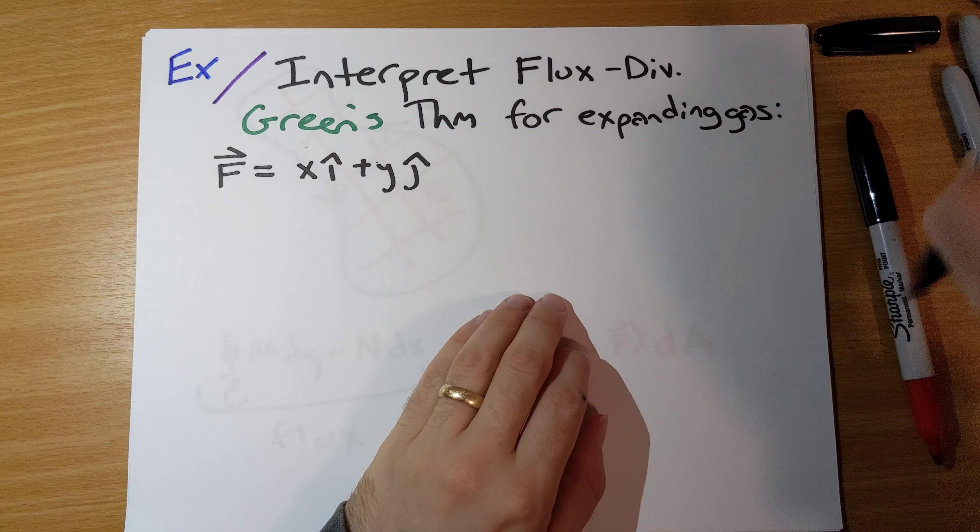I want us to think about the physical interpretation. If we interpret this for our go-to example for divergence — an expanding gas — we'll understand that this makes sense. The vector field F = x i-hat + y j-hat corresponds to an expanding gas: the gas is moving away from the origin. We could think of this as an explosion where everything is fleeing the center.